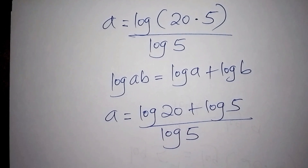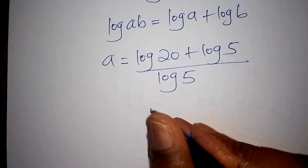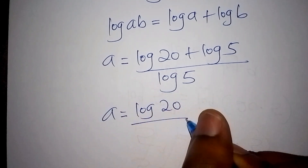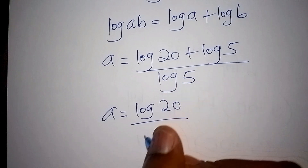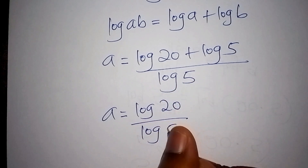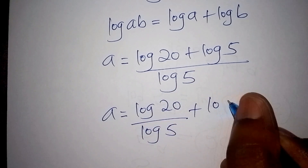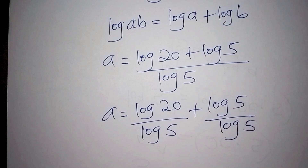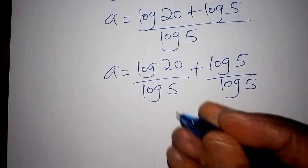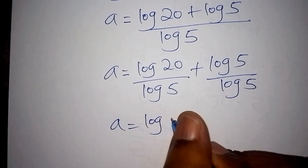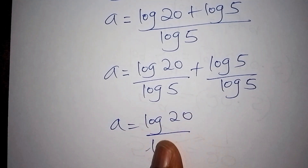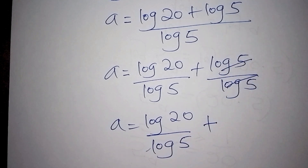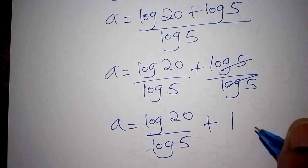We split the fraction by dividing both terms by log of 5. This gives us the log of 20 over log of 5, plus log of 5 over log of 5. Since log 5 divided by log 5 cancels to 1, we are left with log of 20 over log of 5, plus 1.